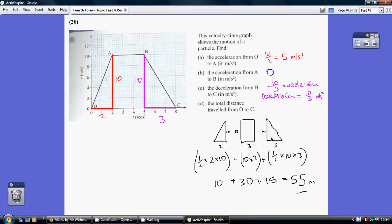I suggest you do three little sketches of each. Work out the area of each. Remember, areas of triangles is half times base times height, whereas the rectangle is just base times height. So work the three out separately, add them together, 55 metres.